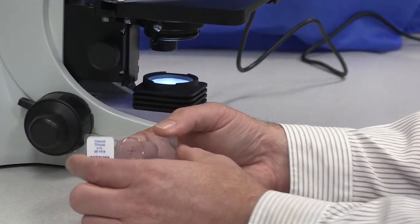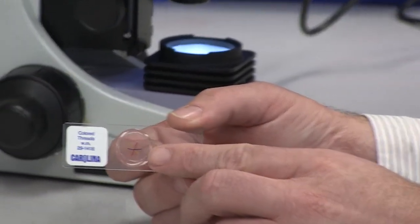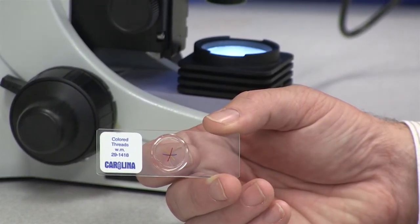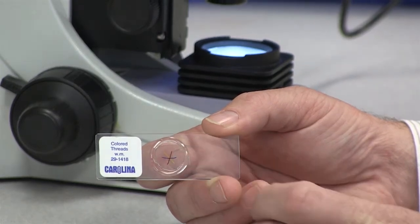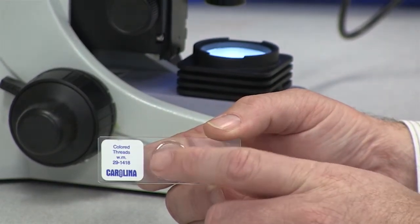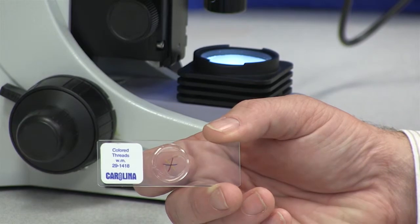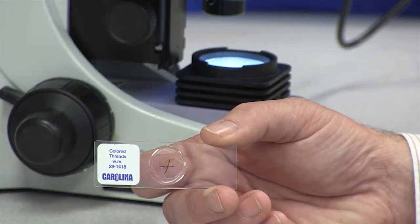As you can see, this is just a glass slide with three small pieces of colored thread placed on the slide, crossing one another. There's a little round glass disc on top of the threads called the cover slip.